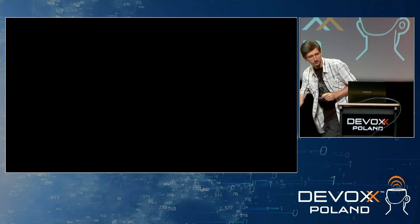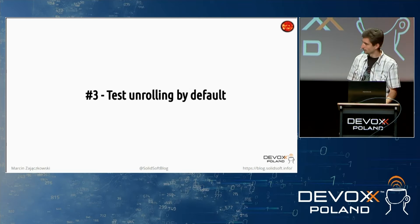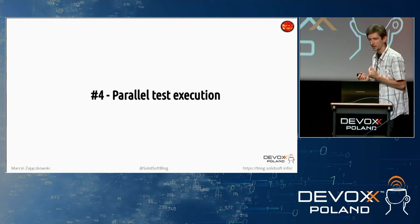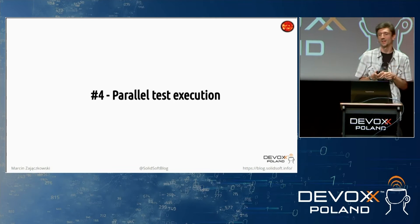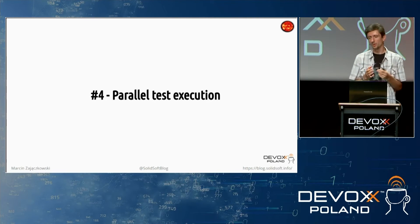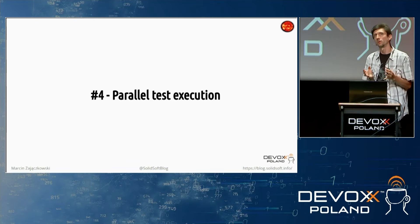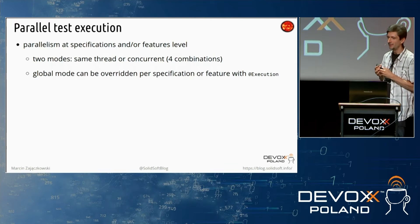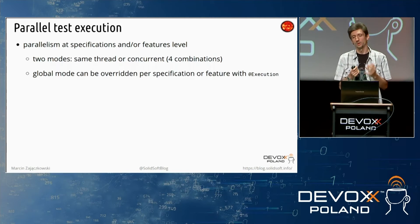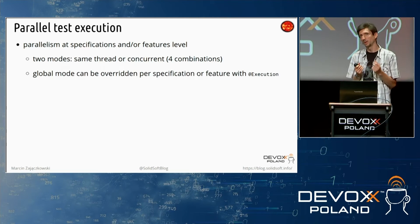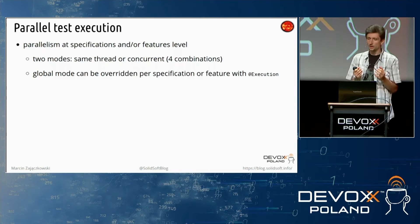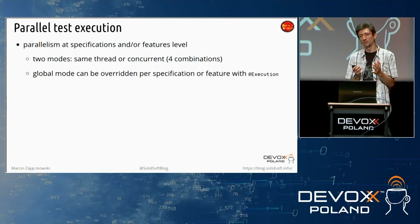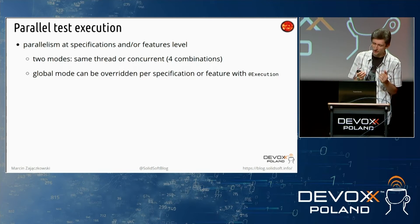Let's go back to slides. Number four: parallel test execution. Fun fact — the current implementation is done at the edge of Spock and JUnit platform, and it was developed in a cross-project team; it could potentially be used also in other APIs for JUnit platform. When explicitly enabled, parallelism in Spock is by default available at both the specification and the fixture level. In other words, both test classes and particular tests can be executed simultaneously. The mode can be changed explicitly for a given test or specification with the execution annotation, and in general we have four different combinations available.